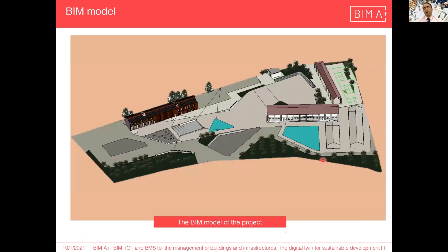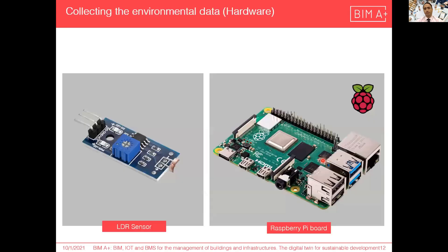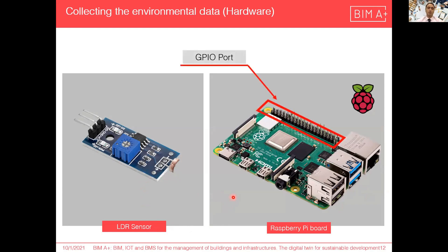In the first step, the BIM model of the project was developed with LOD 300, focusing on the main building. For hardware, I use the LVR sensor, which can collect and sense the environmental light status and connect to the Raspberry Pi. The Raspberry Pi is a single-board computer with processing and storage capabilities. Its main feature is the GPIO — General Purpose Input and Output — port, which allows us to connect different sensors and motors.